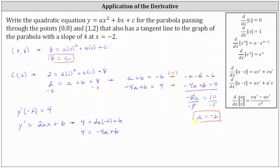Now the last step is to determine the value of b. Using the equation a plus b equals negative 6, and substituting a equals negative 2, we have negative 2 plus b equals negative 6. Adding 2 to both sides gives b equals negative 4.